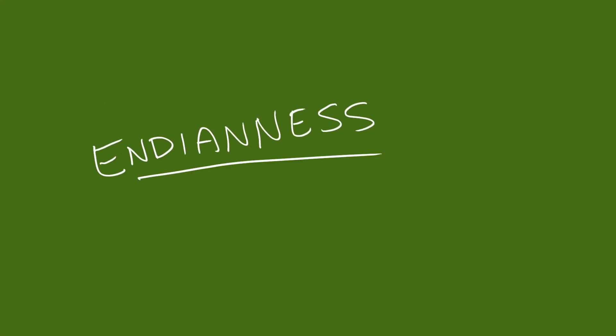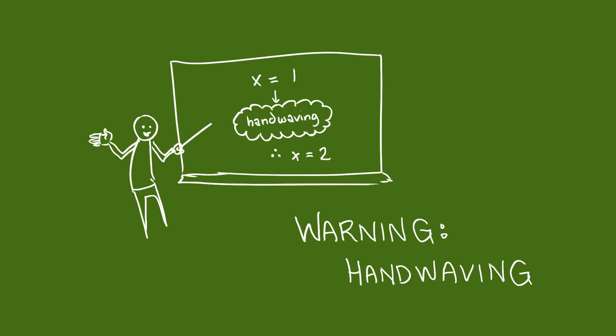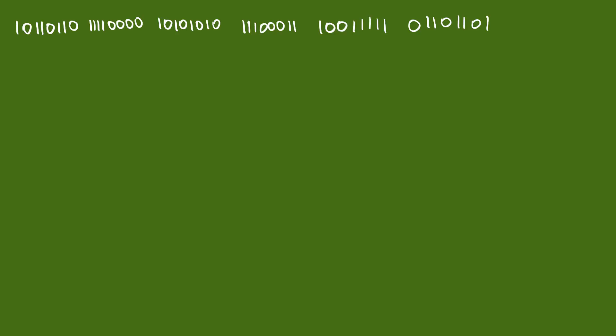Endian-ness. Let's imagine we have six bytes of data stored in a computer. Computers can only really deal with one byte at a time, in this example at least, but these six bytes of data belong together,